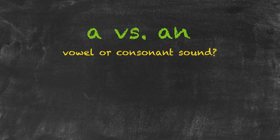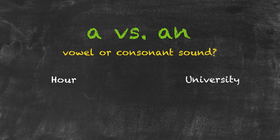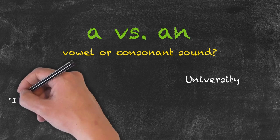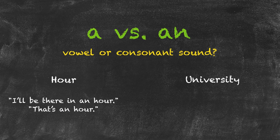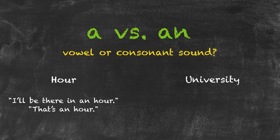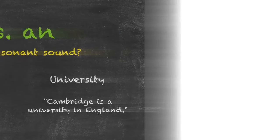Let's look at the two words 'hour' and 'university.' While 'hour' starts with an H, it actually sounds like it starts with a vowel sound. So the resulting sentence is: 'I'll be there in an hour.' University starts with a U, a vowel. However, it sounds like it starts with a Y — 'university.' So when we say it, we use the article 'a': 'Cambridge is a university in England.'